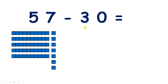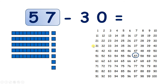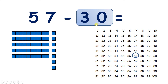Now 57 take away 30. So we start with 5 tens and 7 units. We find 57 on our hundred square. We're subtracting 30, so how many tens are we subtracting? Well, 30 is 3 tens, so we need to take away 3 of these tens. So take away 10, and we now have 47.